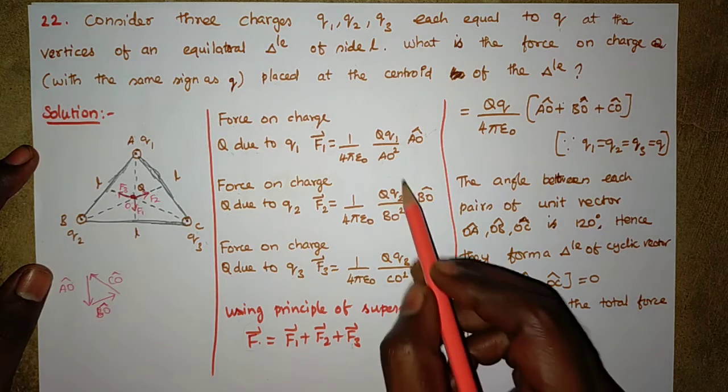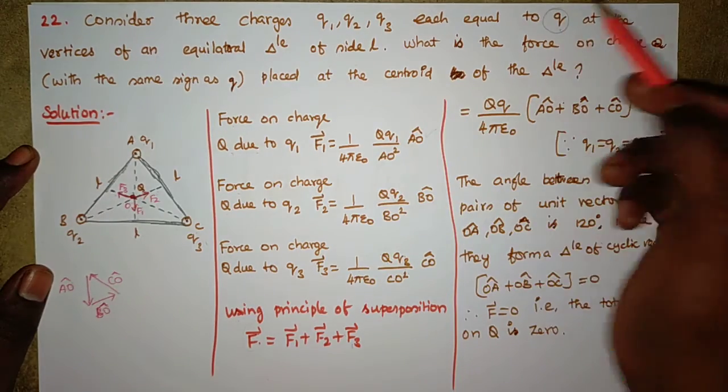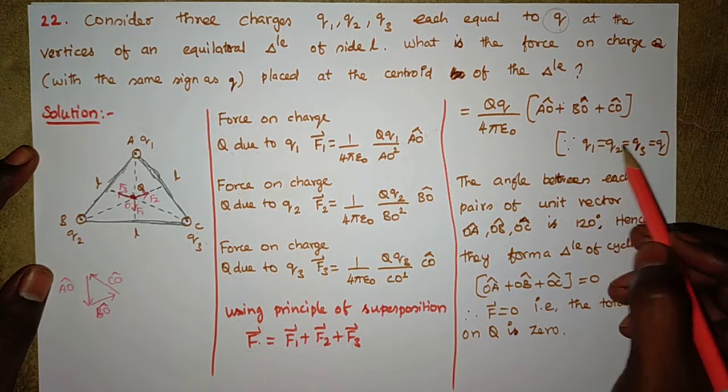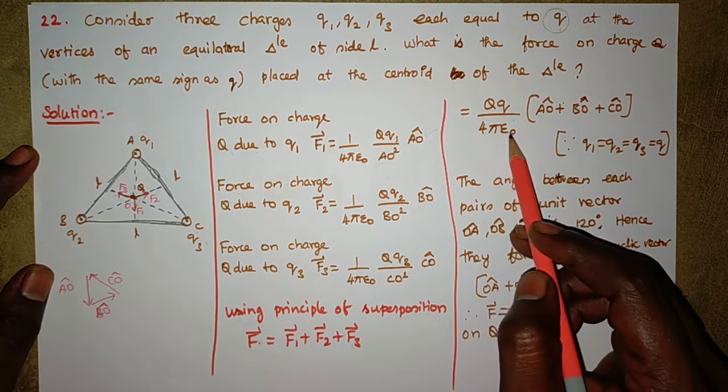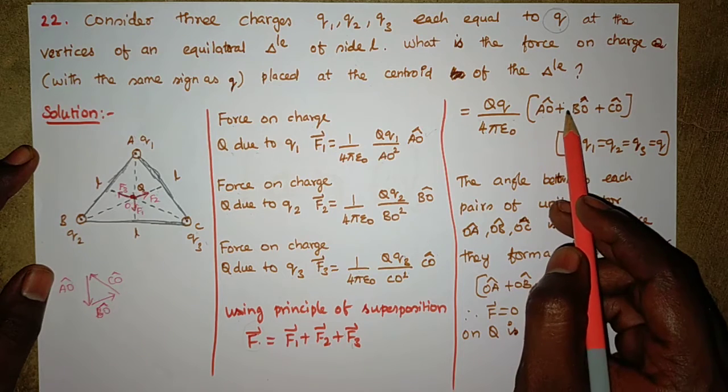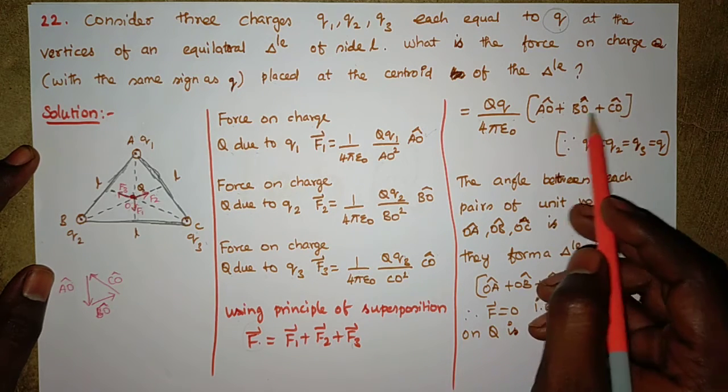Now since Q1, Q2, Q3 all have the same value Q, we have Q1 equals Q2 equals Q3 equals Q. So the total force equals capital Q times small q divided by 4π epsilon not times OA squared times (OA cap plus OB cap plus OC cap).